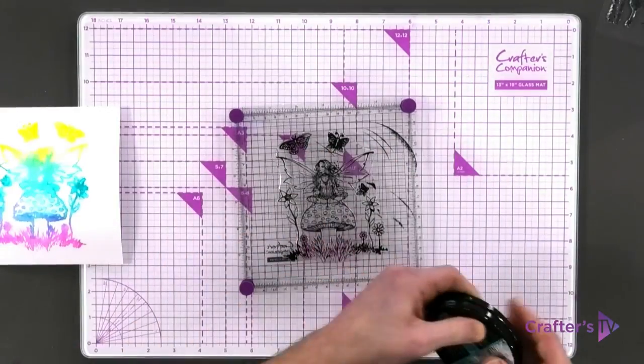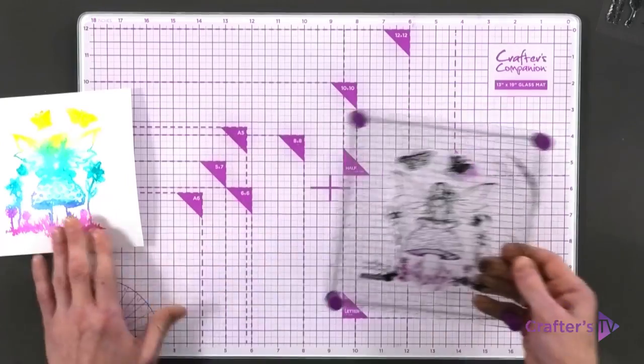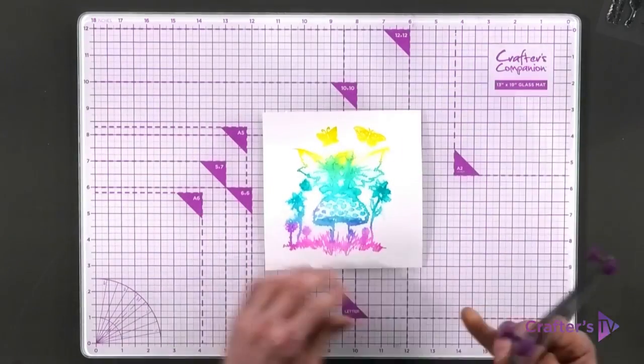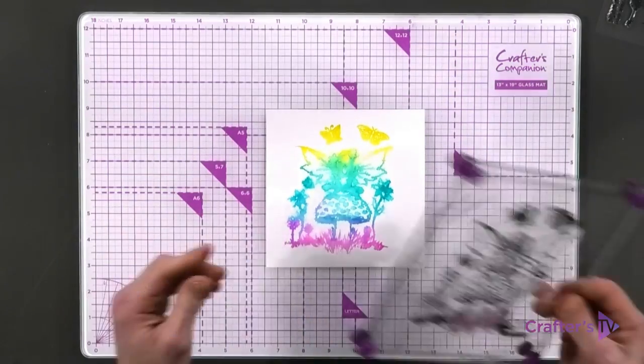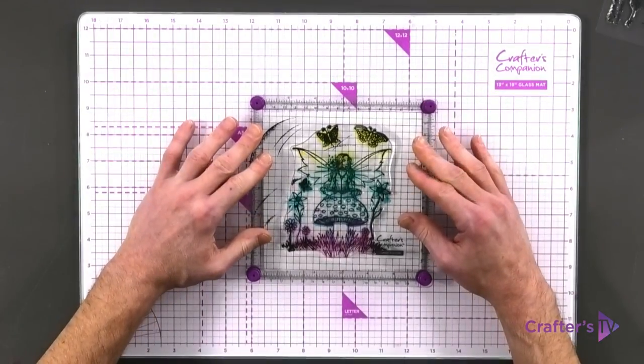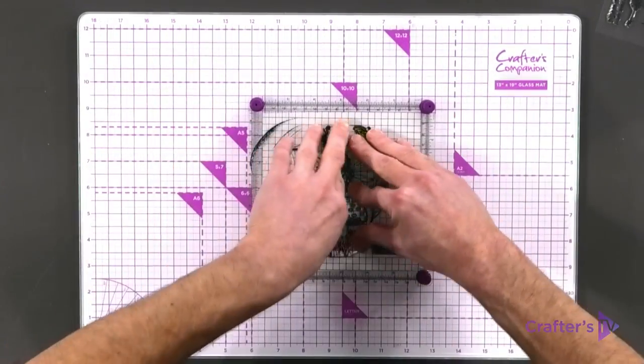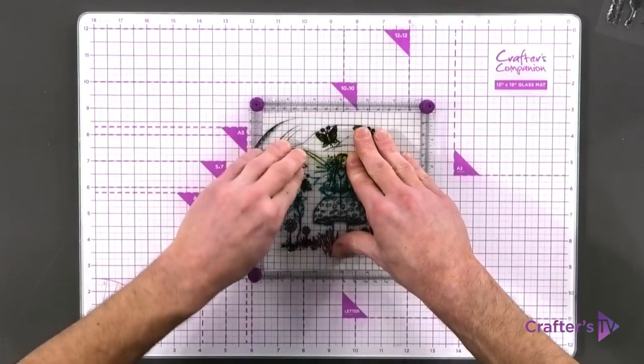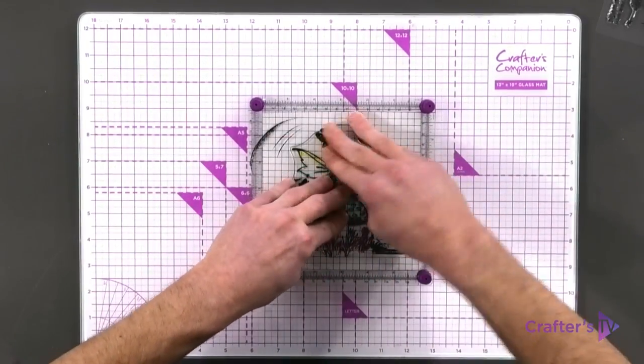Finish that off, give it a good tap and coverage. Don't be worried, don't be neat or precise - just go as close as you can to where you stamped originally, and stamp that in place. That's going to give us that fine black outline detail.